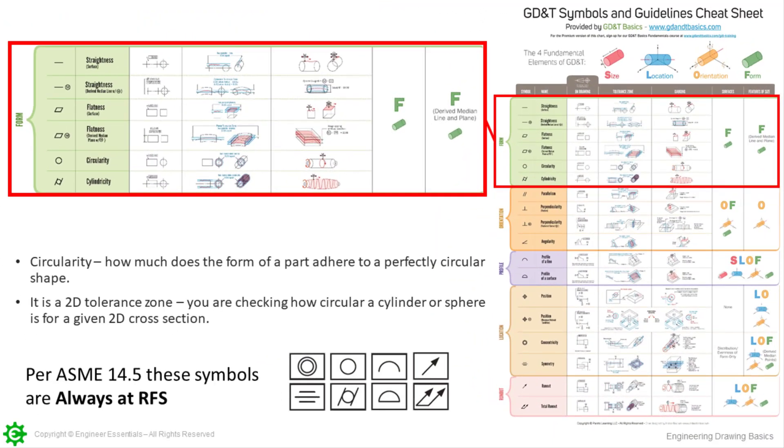What you see on the screen here is our GD&T symbols wall chart often referred to as the cheat sheet. In the top section, the green section, this is all of our form control. Circularity is located up here, makes great for quick reference. It does show for circularity what the tolerance zone looks like here and it is two concentric circles.